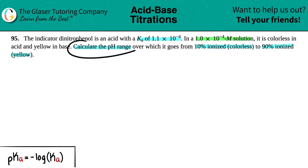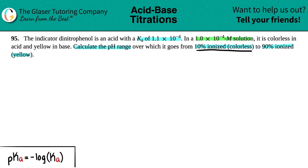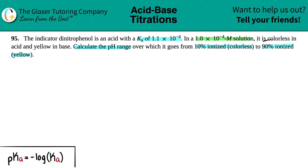We just have to find that pH range in which it would be colorless and then it goes to yellow. Now they did say that it's going to be 10% ionized when it's colorless and 90% ionized when it's yellow. We have to do this in two parts. We're going to first work with the colorless ionization, and then we're going to work with the yellow ionization, the 90%.